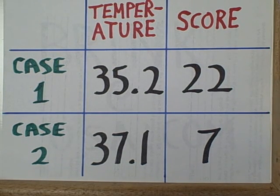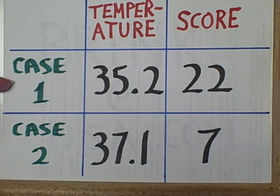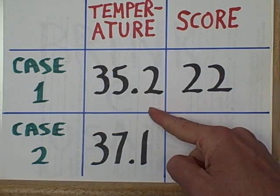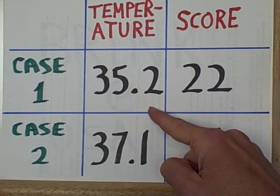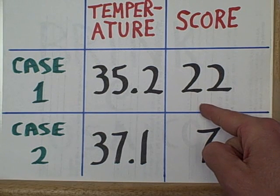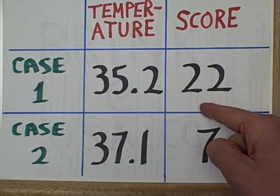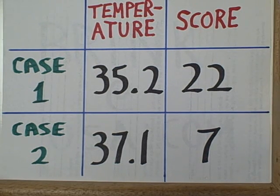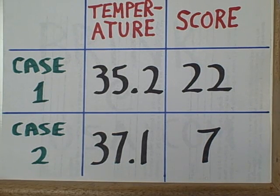Usually you'll be entering your data for one case, variable by variable. In other words, you'd be entering the temperature for our first subject and then entering the score that our subject had. In this situation, you could just use the right arrow key to enter your data and to move on to the next cell.